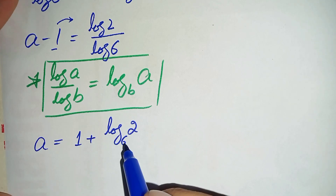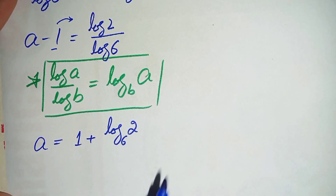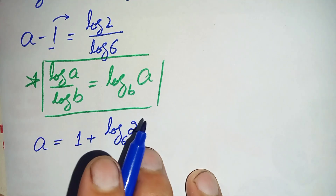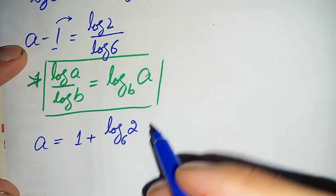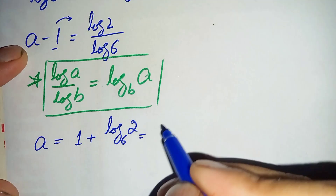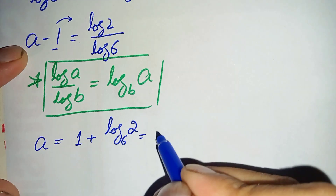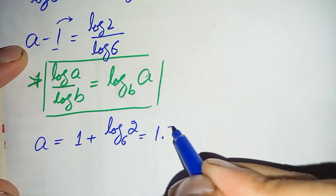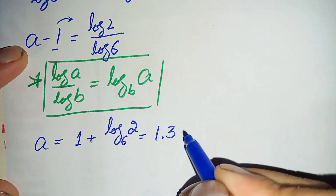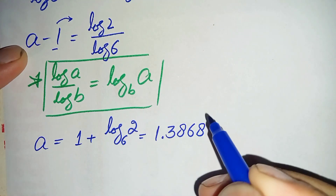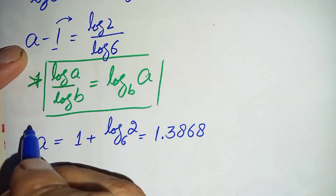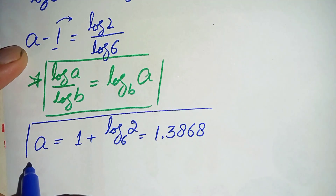Moving the negative 1 to the right hand side as positive 1, the value of a equals 1 plus log of 2 with base 6. This is our answer in logarithmic form. If we convert this to decimal form, we get approximately 1.3868, which is our final answer.